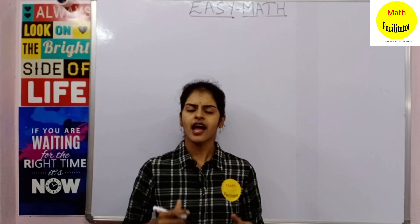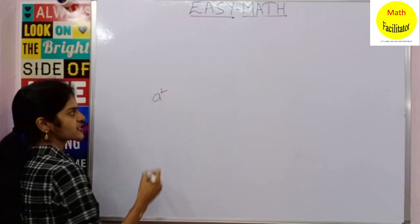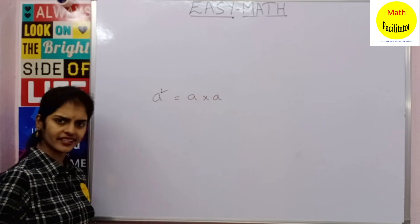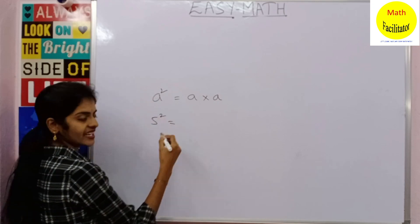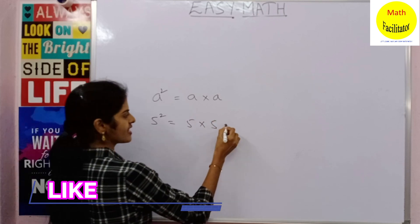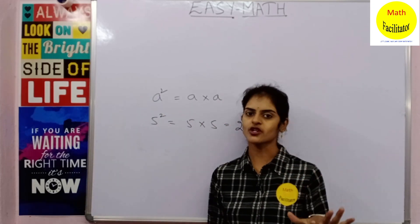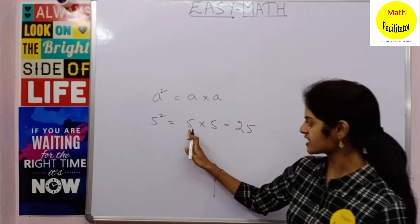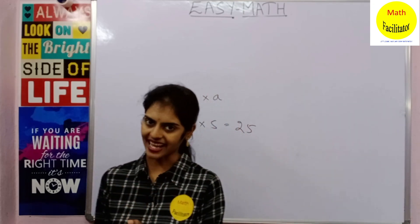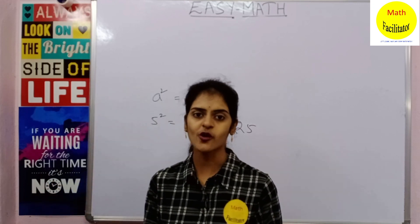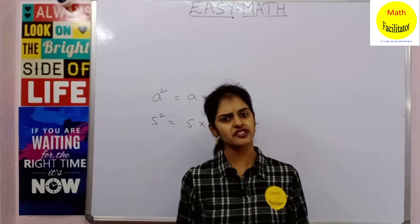Let us quickly start the session. I hope you all know squares of any number. If I want the square of a, a² is nothing but a × a. So multiplying a two times gives you a². Now, 5² = 5 × 5 = 25. One squared is 1, two squared is 4, three squared is 9, four squared is 16, five squared is 25, six squared is 36, seven squared is 49, eight squared is 64, nine squared is 81, and ten squared is 100. Till here everyone can comfortably tell the answer.